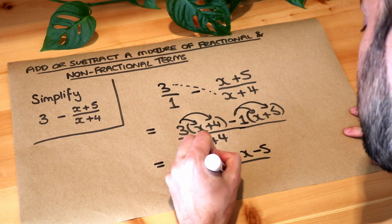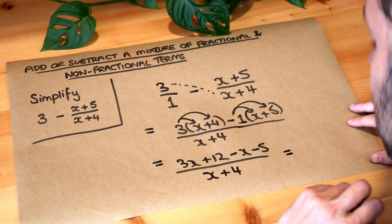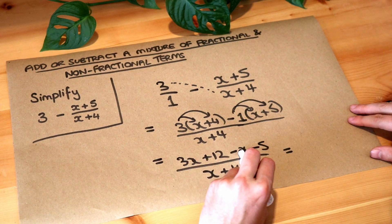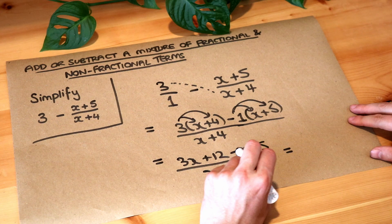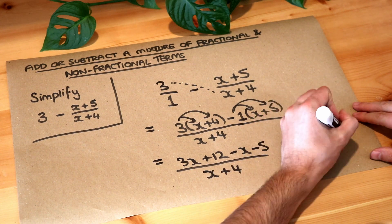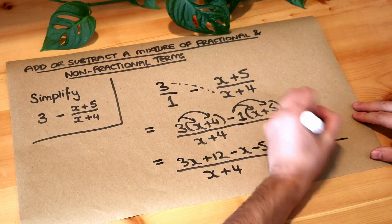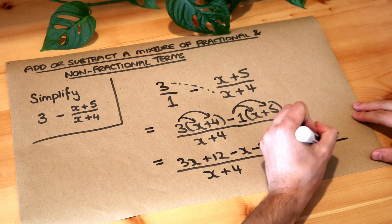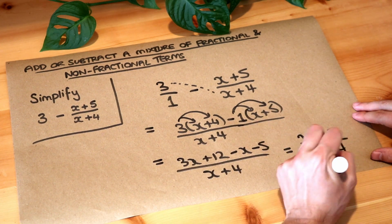We've still got that x plus four there. And then we can just collect like terms in the numerator. We've got three x minus x. So three lots of x minus one lot of x is two lots of x. And we've got 12 minus five is plus seven. And we've still got that x plus four. And that is the final answer.